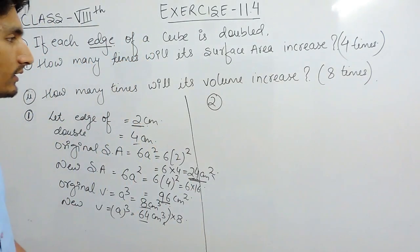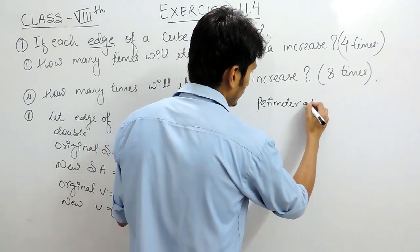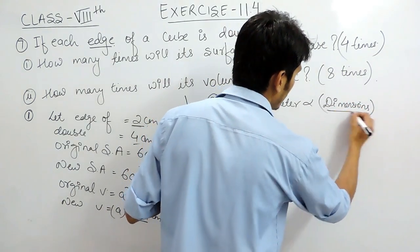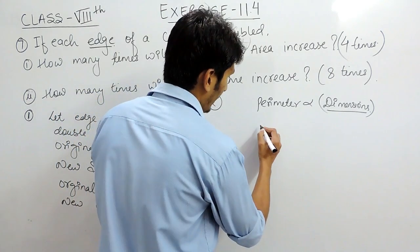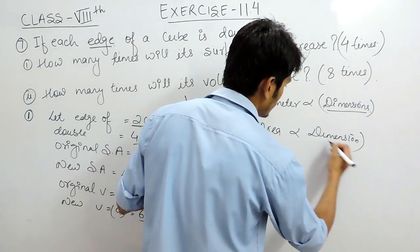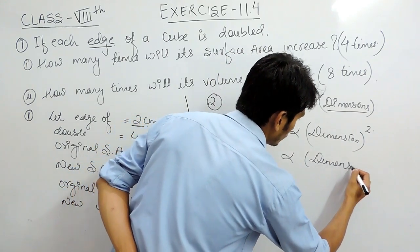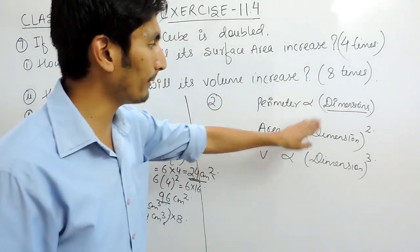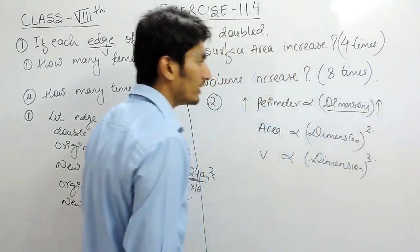In the second method, you have to remember that the perimeter is directly proportional to its dimensions. Dimensions are basically the length, breadth, and height. The perimeter is the outer boundary of any figure. Area is directly proportional to dimension squared, and volume is directly proportional to dimension cubed.